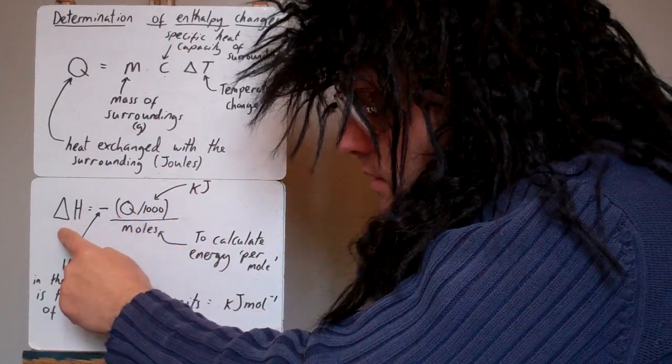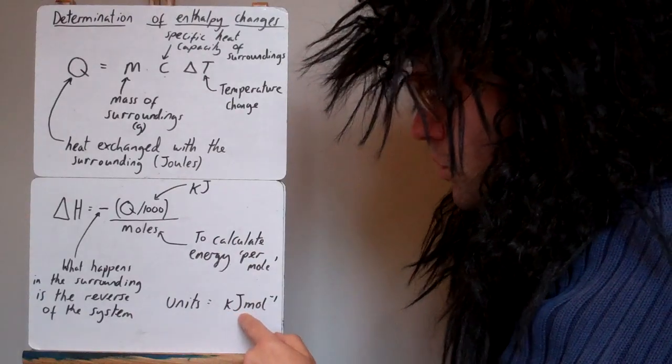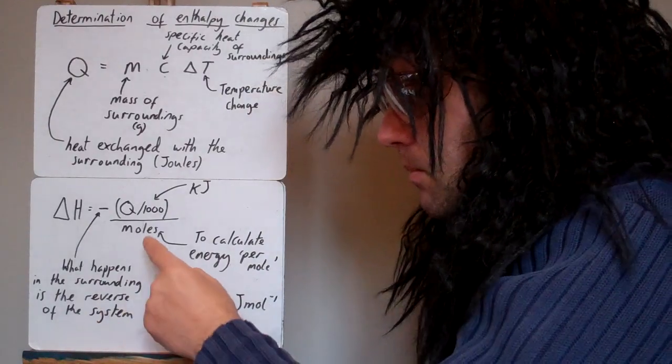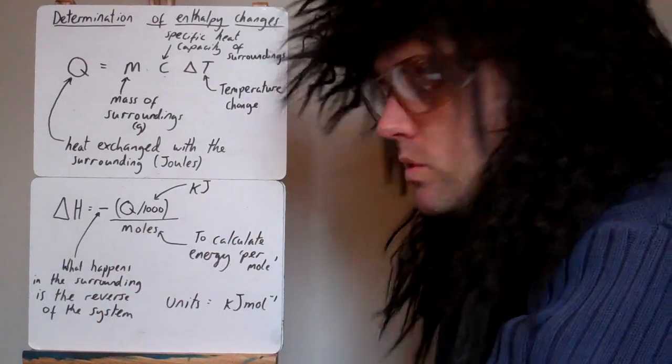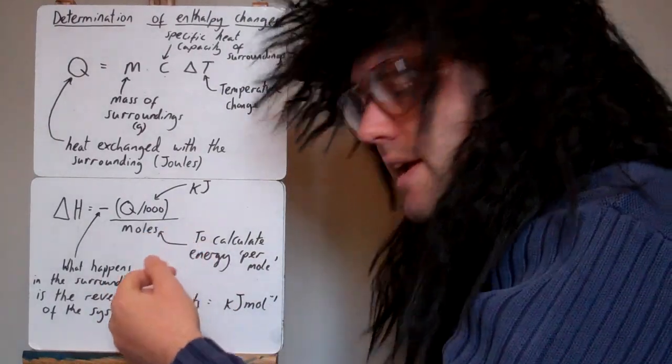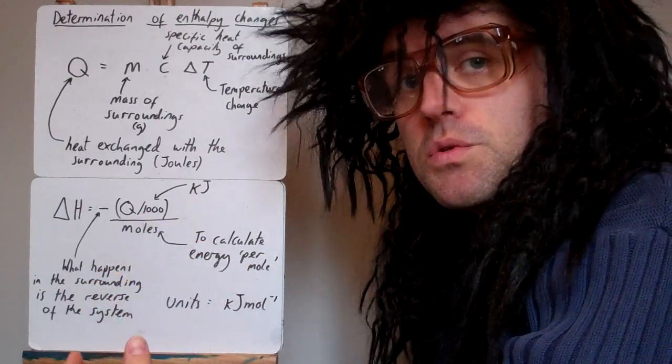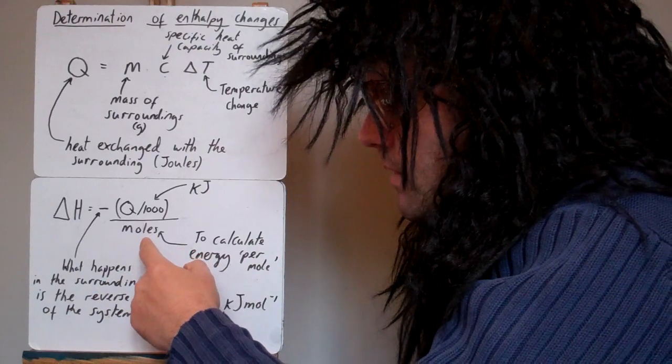And delta H is always measured in kilojoules per mole, so we need to divide by the number of moles that have reacted. Now it's important that you use the limiting reagent moles in this equation, because if it's an excess reagent, there's some of it left over and all the moles haven't reacted, so we're going to use the limiting reagent moles.